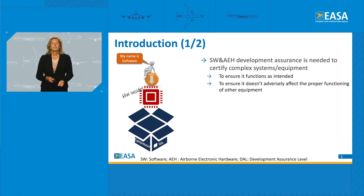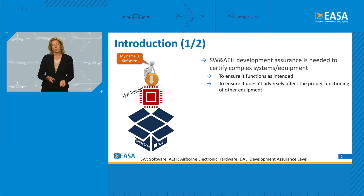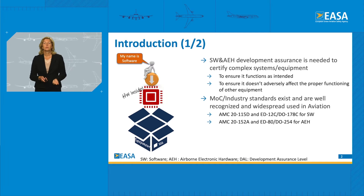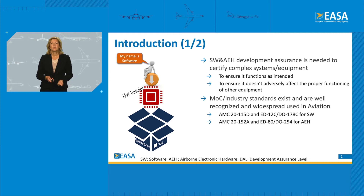Development assurance is needed in the domain of software and Airborne Electronic Hardware to certify complex systems and equipment. This is to ensure that it functions as intended and that the equipment doesn't adversely affect the proper functioning of other equipment. We have means of compliance and industry standards that are well recognized and widespread used in aviation. We recognize them within our AMCs, Acceptable Means of Compliance. For software, it is AMC 2115D, and for hardware, it is AMC 2152A.